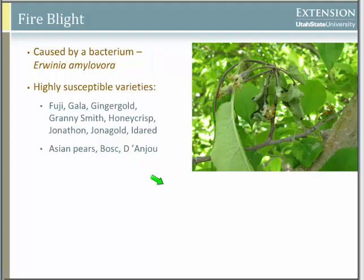Fire blight can be a problem on certain apple varieties. Those of you dealing with ornamental trees are probably familiar with fire blight on hawthorn or ornamental pears. It's also a problem on certain apple varieties that can be highly susceptible — the most common ones because they taste good, like Fuji, Gala, Honeycrisp, et cetera.